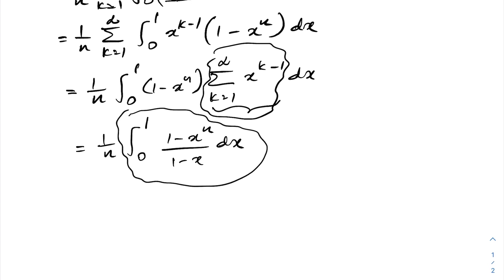The integral from 0 to 1 of (1 minus x to the n) over (1 minus x) dx is the integral representation of the nth harmonic number — this is Euler's integral representation of H sub n. So our final answer is H sub n over n. If you like this type of video, especially integrals and sums, please subscribe to this channel. Thank you for watching.